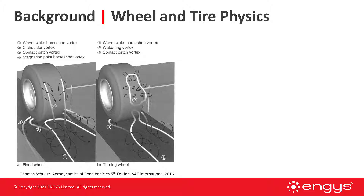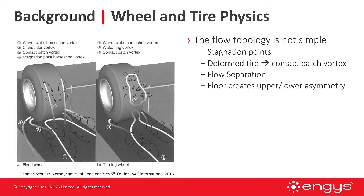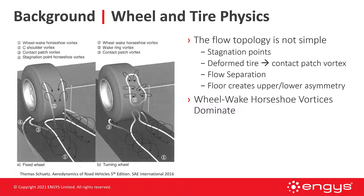In terms of background for wheel and tire physics, flow topology is not simple. It's not just a bluff body simulation. There are stagnation points, contact patch vortices caused by deformed tires, and flow separation over the top of the tire. There are influences from the floor because the floor creates upper-lower asymmetry in this wheel system. On the left we've got a fixed wheel versus a turning wheel — these are freestanding wheels. In both cases, wheel wake horseshoe vortices dominate.